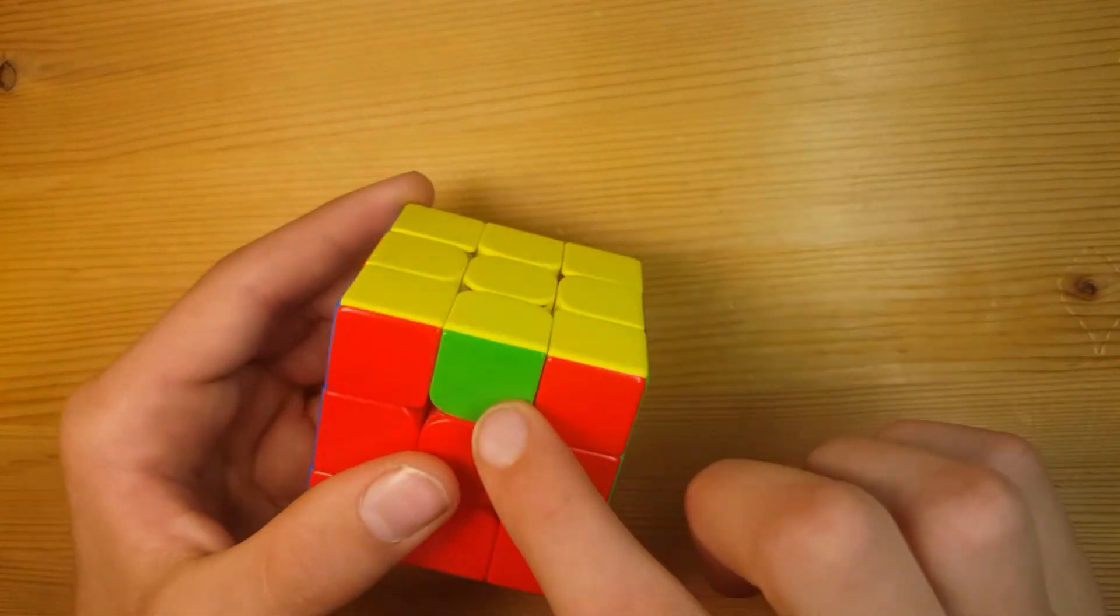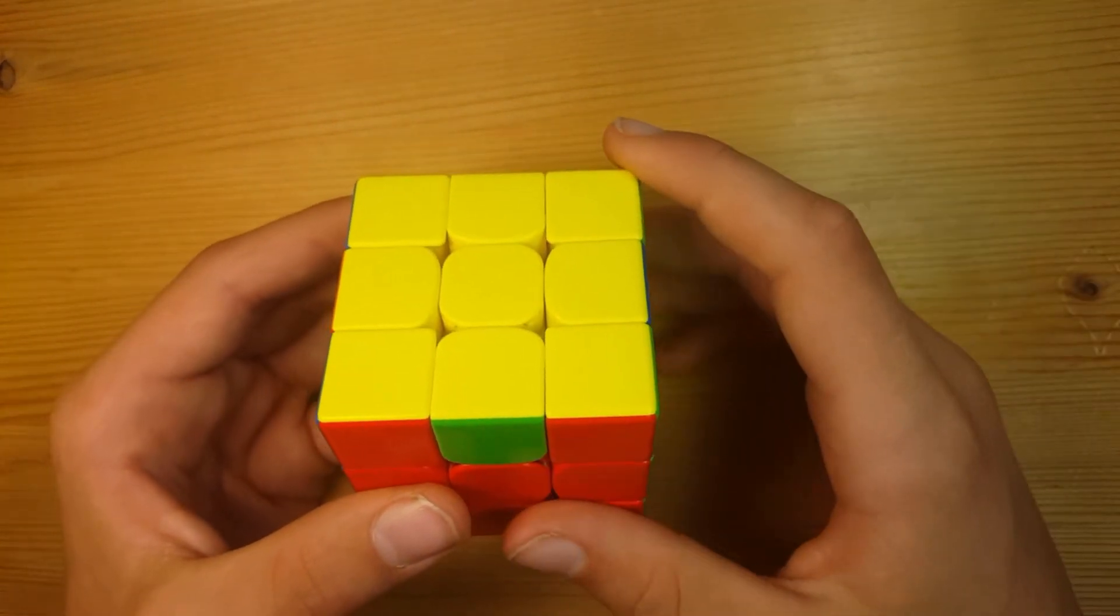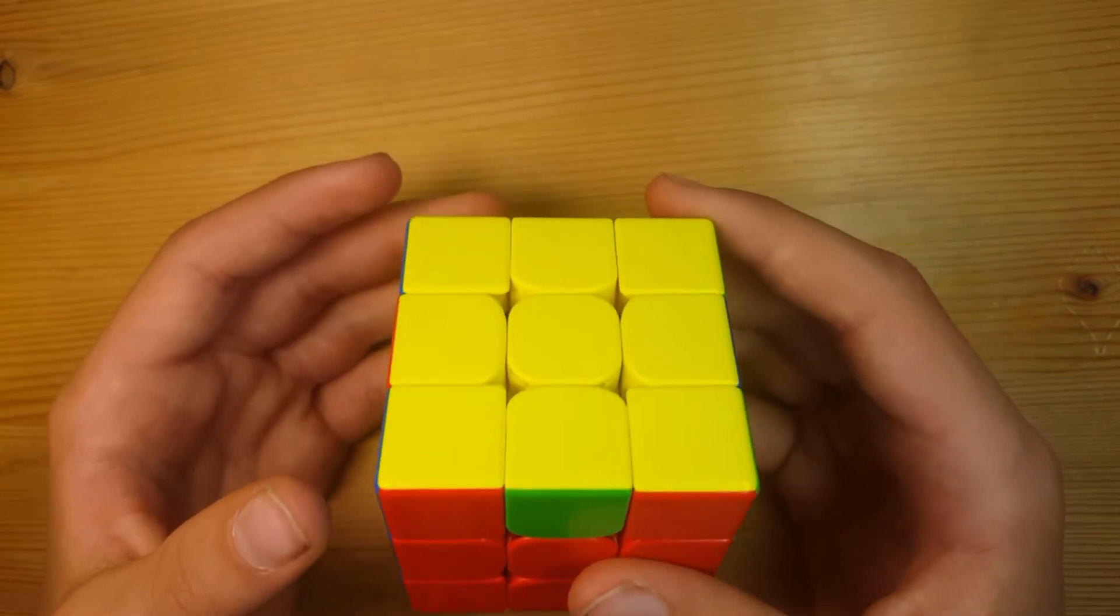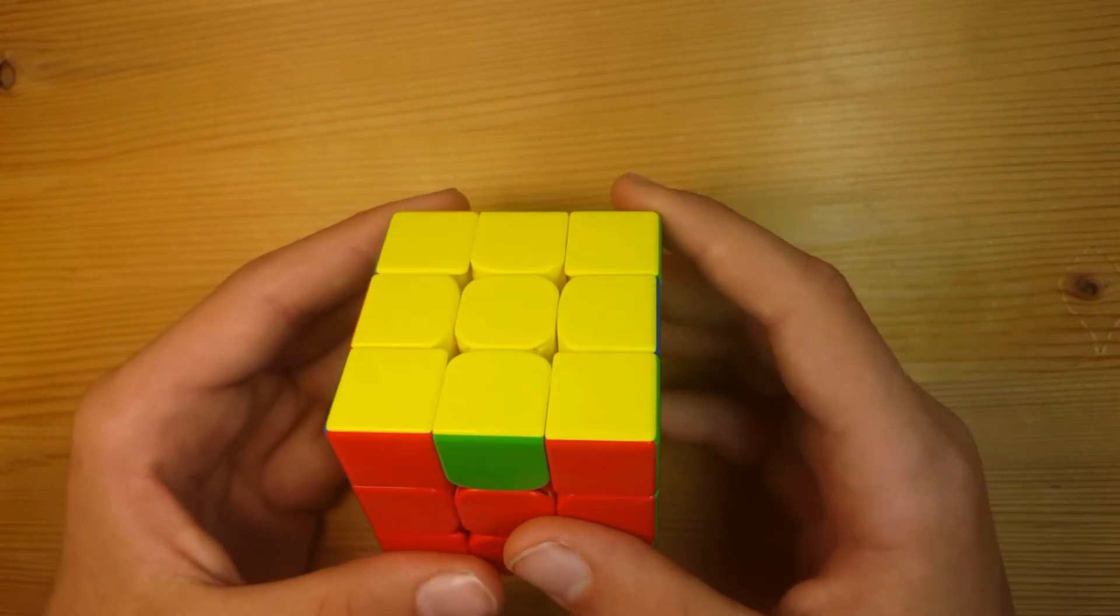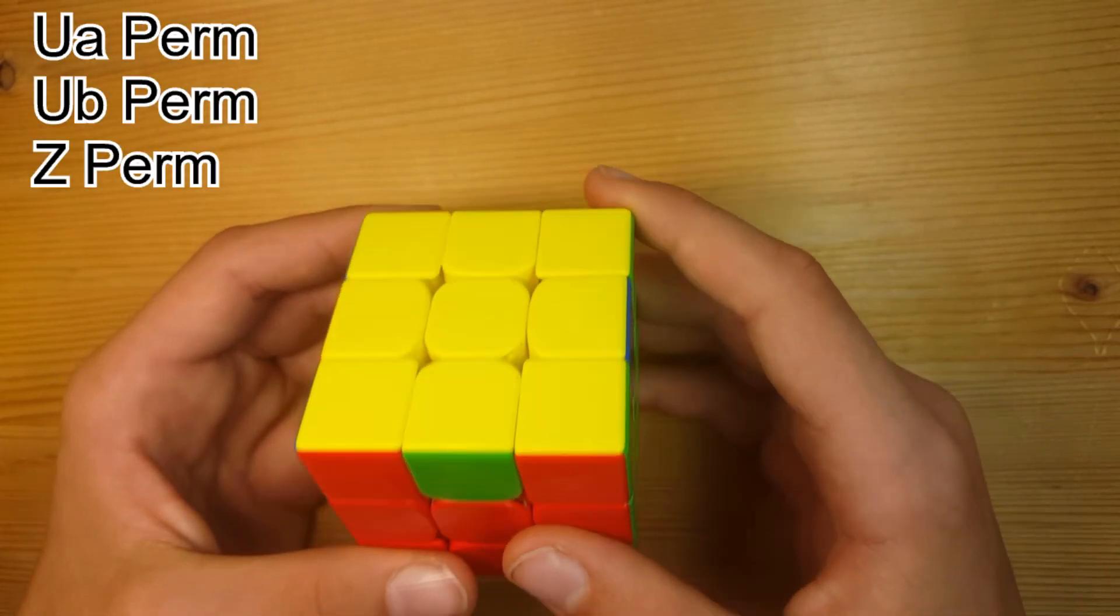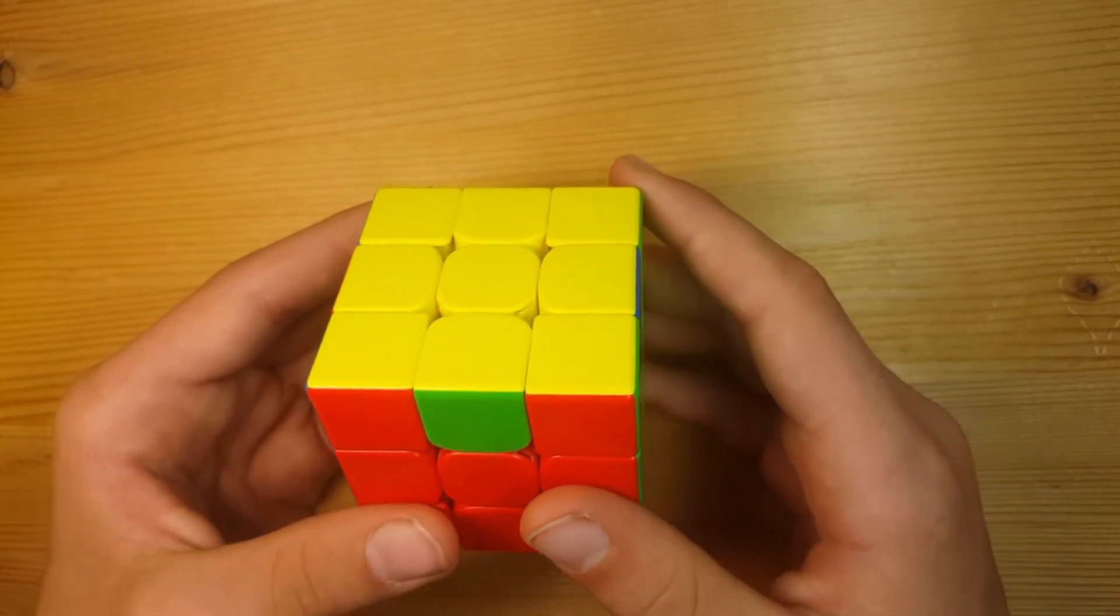Now let's solve the edges. There are four algorithms you need to learn, but one you will already know if you learned beginner PLL. The algorithms are UAPERM, UBPERM, ZPERM, and HPERM. Let's start with UAPERM.